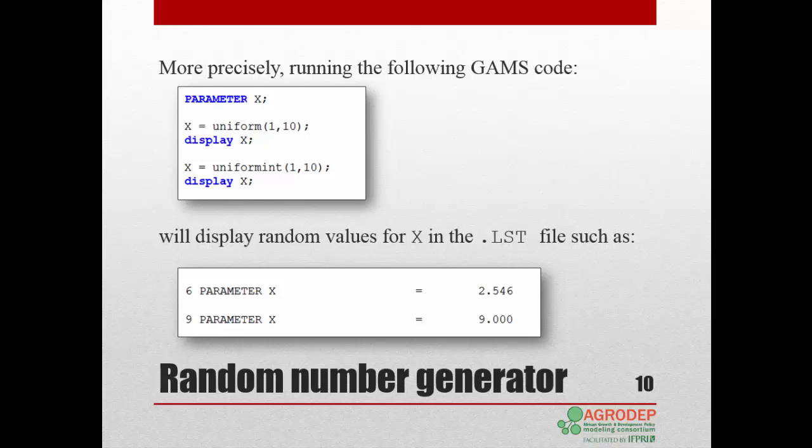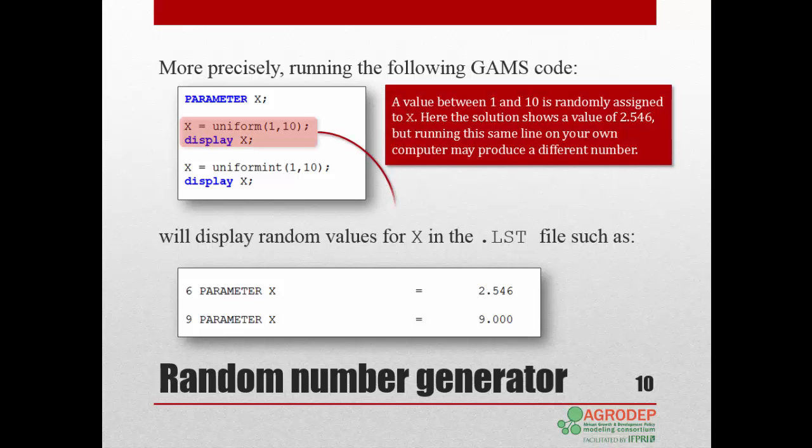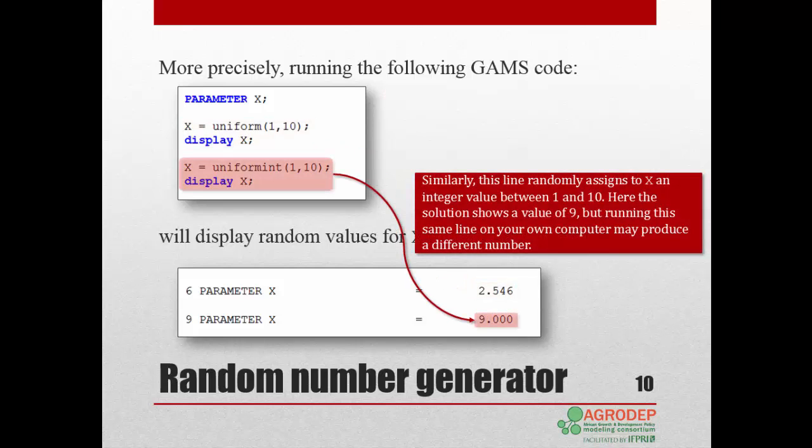This is what you will see in the list file. The first display shows the value between 1 and 10 randomly assigned to X. We show a value of 2.546, but running the same code on your computer may produce a different number. Similarly, the second display shows the integer between 1 and 10 randomly assigned to X. Again, we show a value of 9, but the same code may generate a different number on your computer.